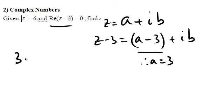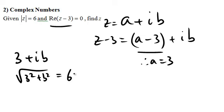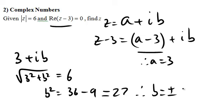So I have a variable that is that. And I know its length is 6. The length of this is the square root of 3 squared plus b squared. That has to equal 6. And so you can work out b very easily, remembering to put a plus or minus in. And therefore, b is equal to plus or minus root 27.